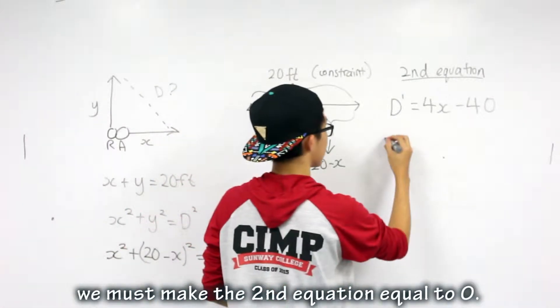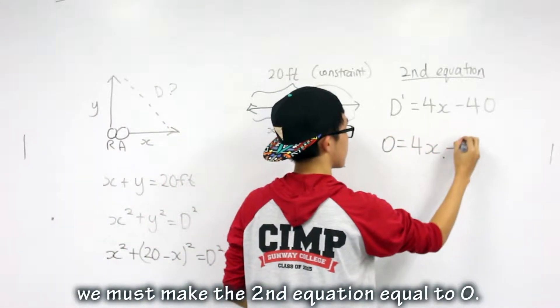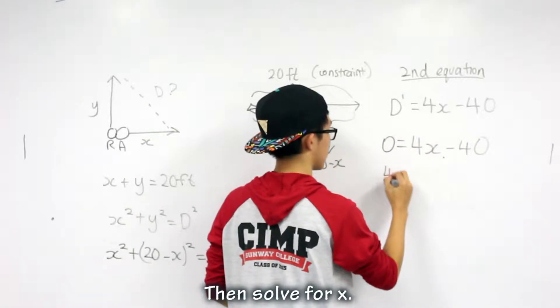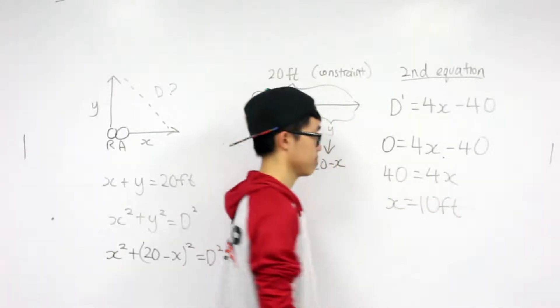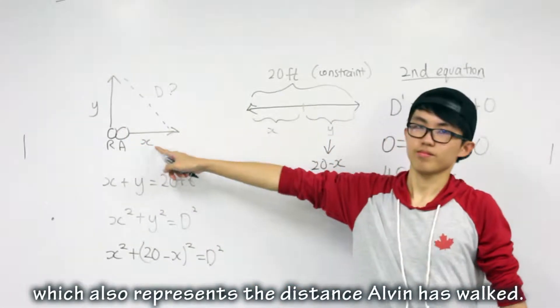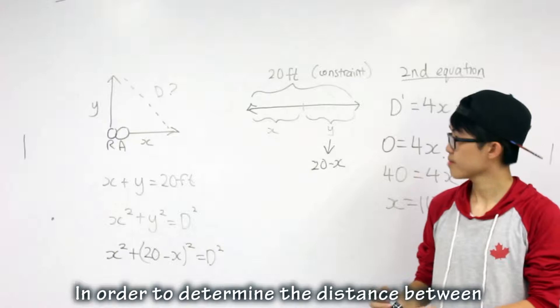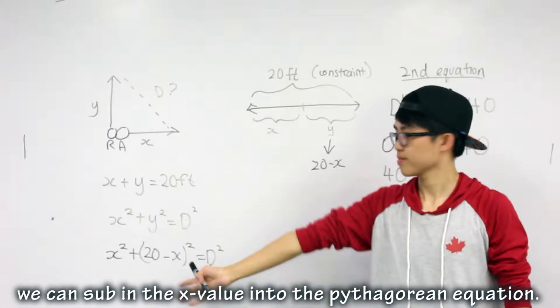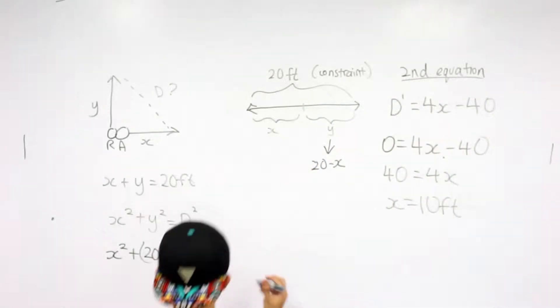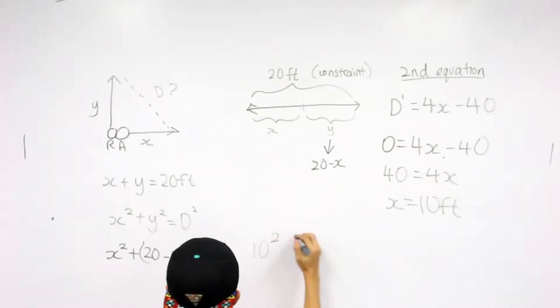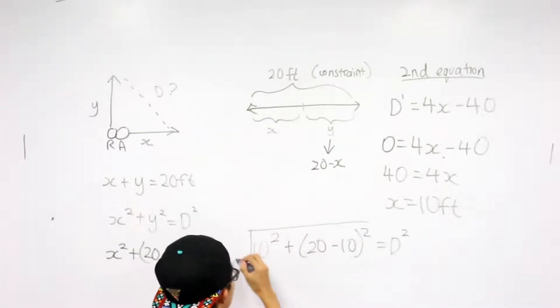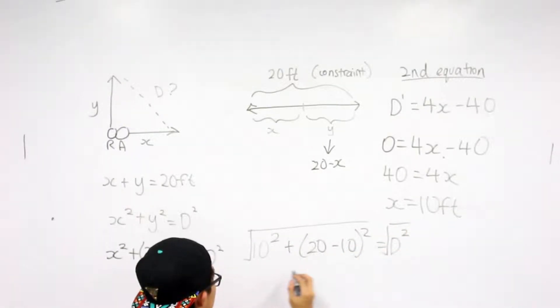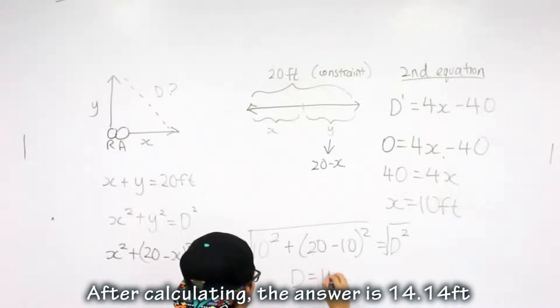In order to find the minimum value, we must make the second equation equal to 0. Then solve for x. The x is found out to be 10 feet, which also represents the distance Alvin has walked. In order to determine the distance between both of them after they finish walking, you can sub in the x value into the Pythagorean equation. After calculating, the answer is 14.14 feet.